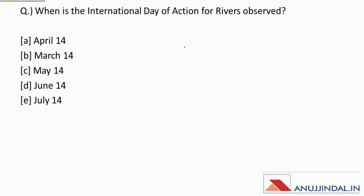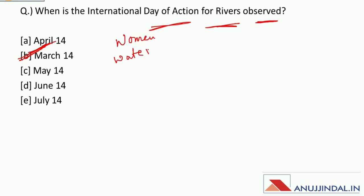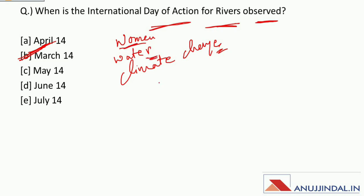When is the International Day of Action for Rivers observed? This year, International Day of Action for Rivers was observed on March 14th. This year's theme was 'Women, Water, and Climate Change.'